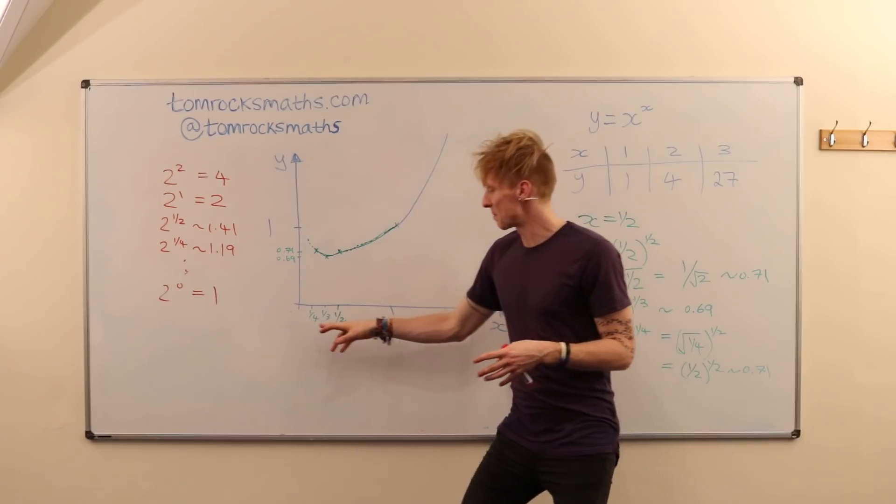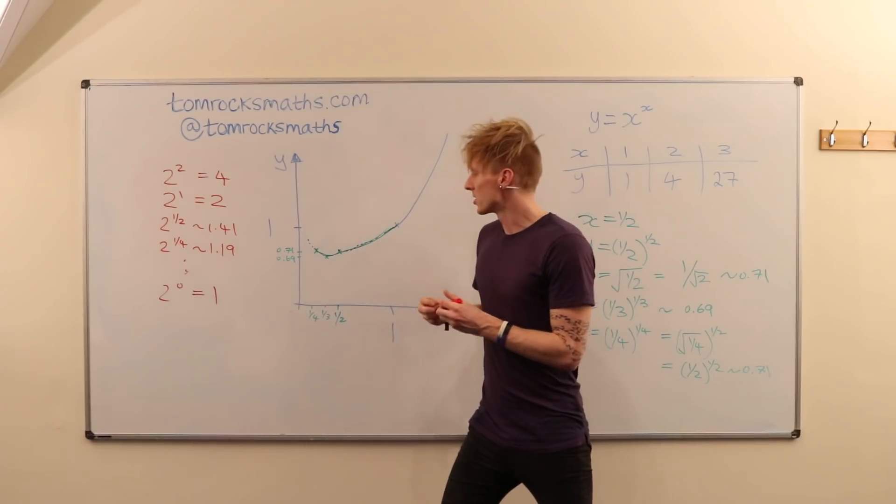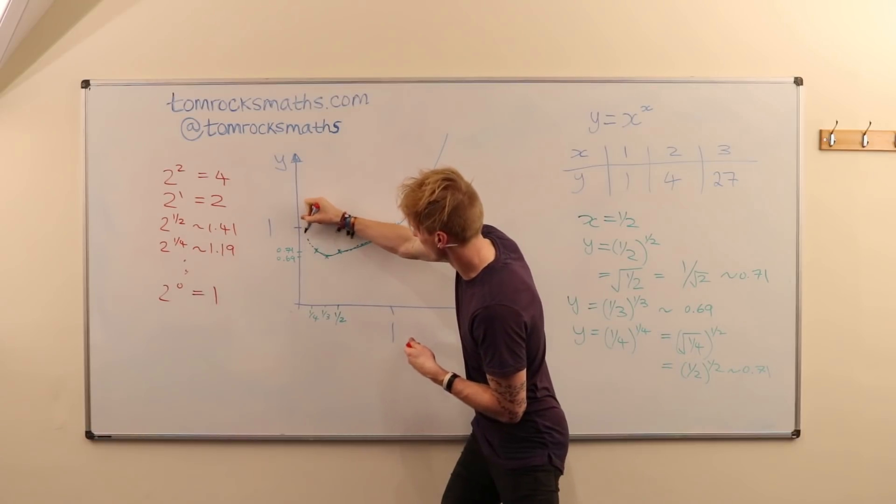And if you go back to our graph and think about where would 1 divided by 1 million, where would that x value lie, it would basically be on the axis. And the answer would be 1. So you can see that these points here would start to increase.